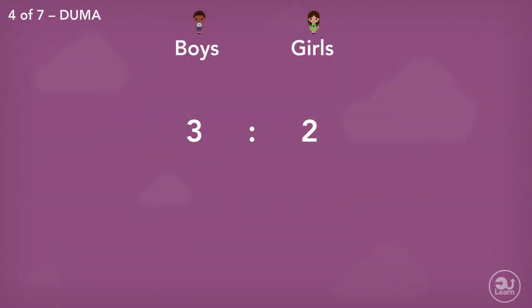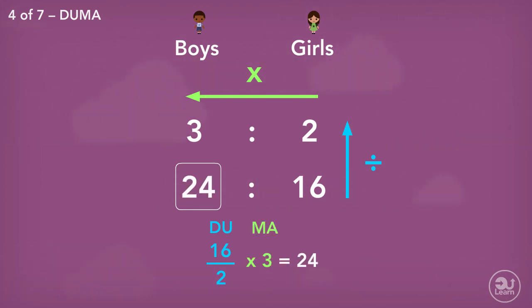The ratio in the question is three to two, and we know there are 16 girls, and we want to find the number of boys to then find the total number of toddlers. We lay out our ratio like so. We divide up, starting from the bottom, then multiply across. That means we start with 16 divided by 2, then multiply by 3, which gives us 24. This will always work, regardless of the ratio.